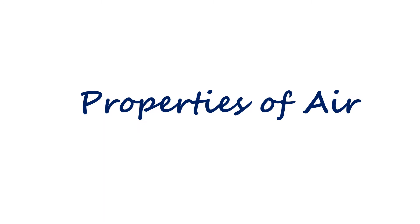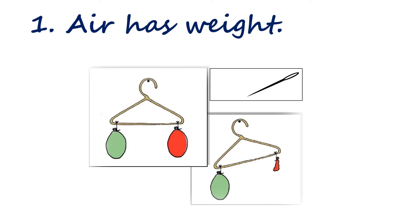Now let's look into the properties of air. The first one is air has weight. Take a hanger and two inflated balloons and a thread to balance the balloons. Tie the inflated balloons on each end of the hanger and hold it straight. We observe that both the balloons are balanced. When I poke one of the balloons with a needle, it becomes deflated, and the inflated balloon side of the hanger goes down. Why? Because air has weight.